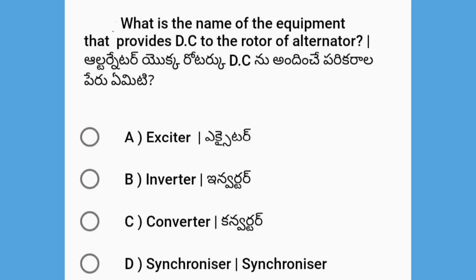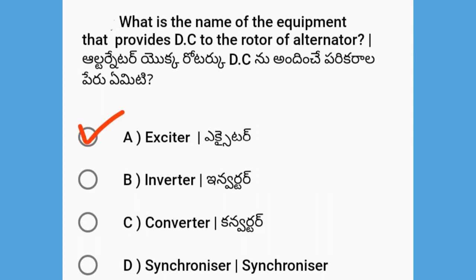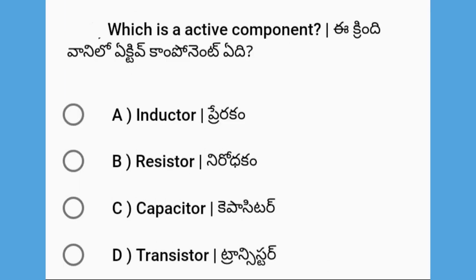Next, what is the name of the equipment that provides DC to the rotor of an alternator? The options are exciter, inverter, converter, and synchronizer. The answer is exciter — the alternator rotor field exciter.